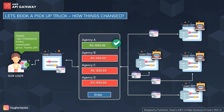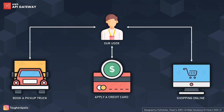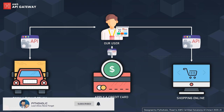This was all made possible by APIs, or application programming interfaces. Every communication you see here — from the user to the application, from the form to the backend servers of all the agencies, and the response back — that is the magic of APIs. With APIs, you can book a pickup truck, apply for a credit card, and shop online with just a few clicks.